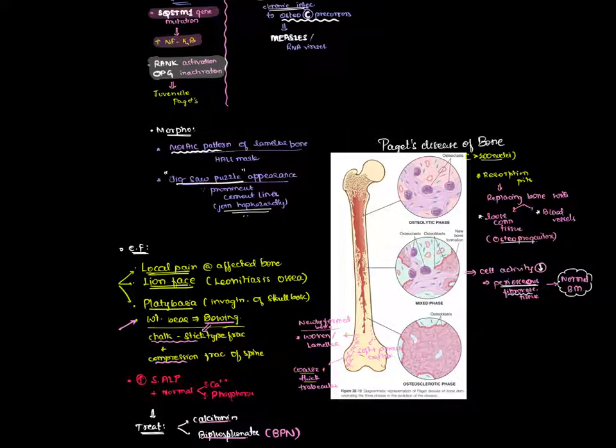The pathogenesis can be divided into genetic and environmental causes. Genetic cause may be due to SQSTM1 gene mutation, which causes increase in NF kappa B, responsible for Paget's disease.